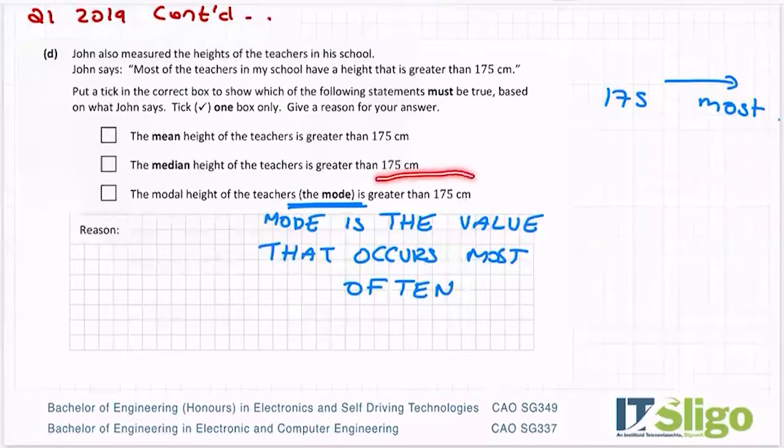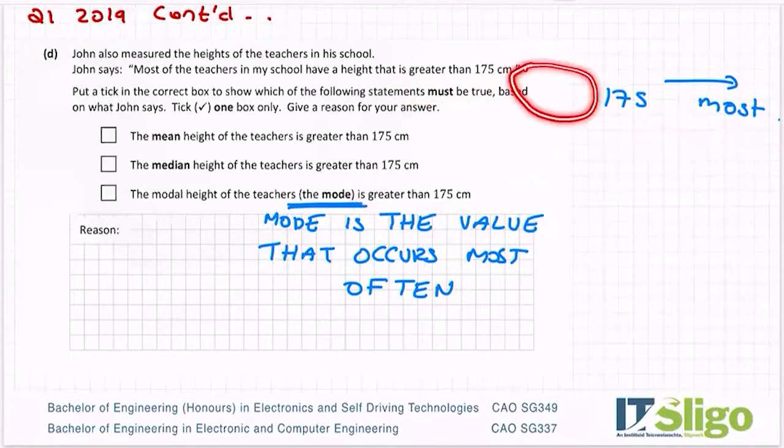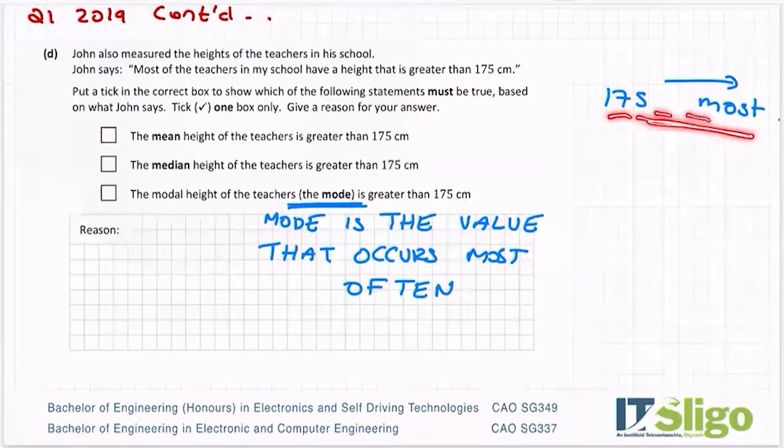The modal height of the teachers is greater than 175. Well, I don't know that from the data that it gave us. So I can't really tick that box. So that box may not be true. It could be true, but it may not be true. I don't have enough data from here to know that the mode is greater than 175. It may not. There may be three teachers here that are 174 centimeters, and all of the rest of the teachers could be 175, 176, 177, 178, 179. Do you see what I mean? So not necessarily. So I'm going to rule out this one here.